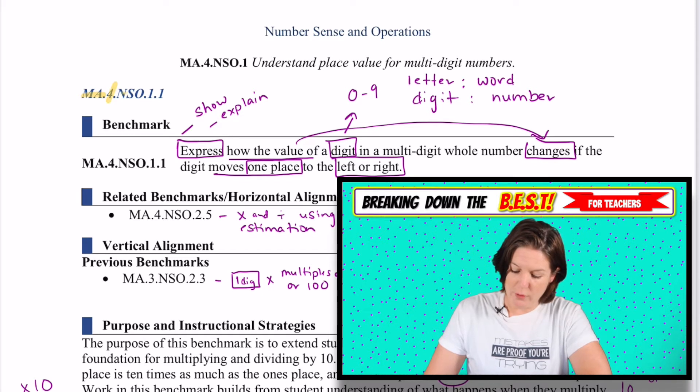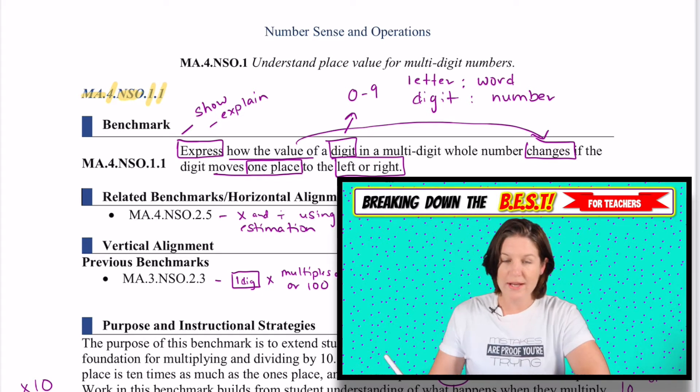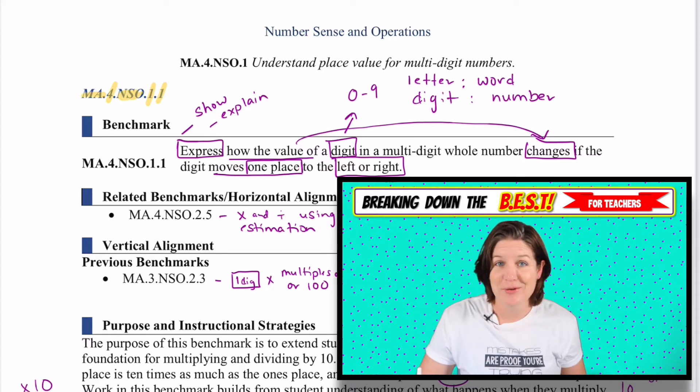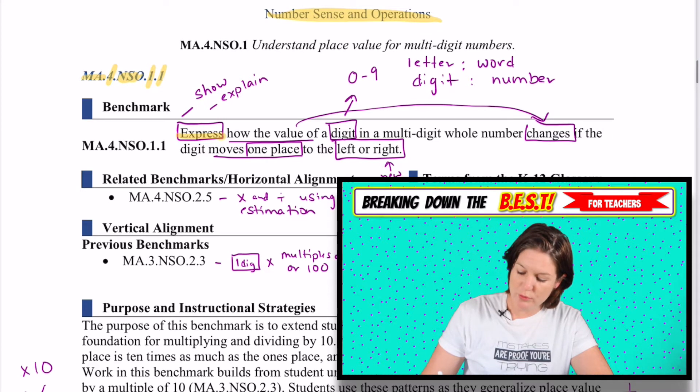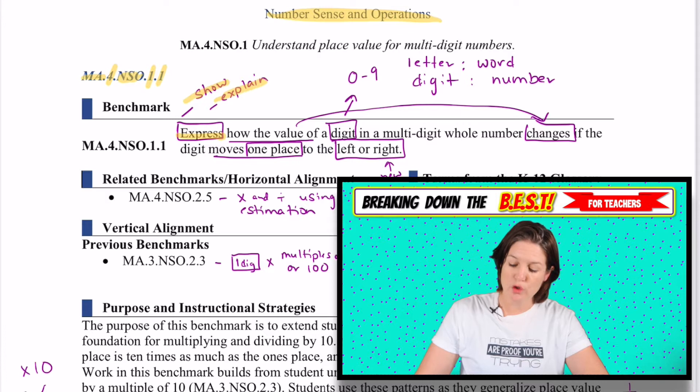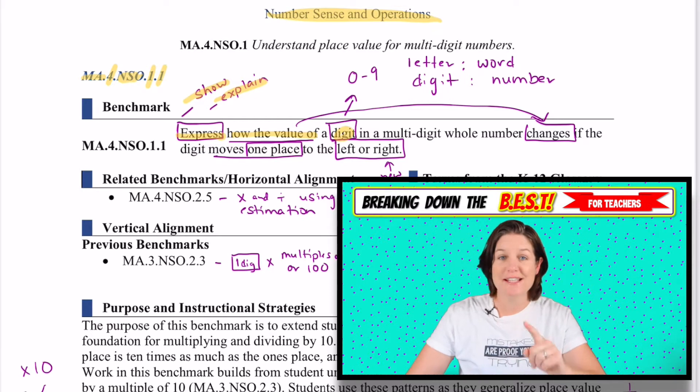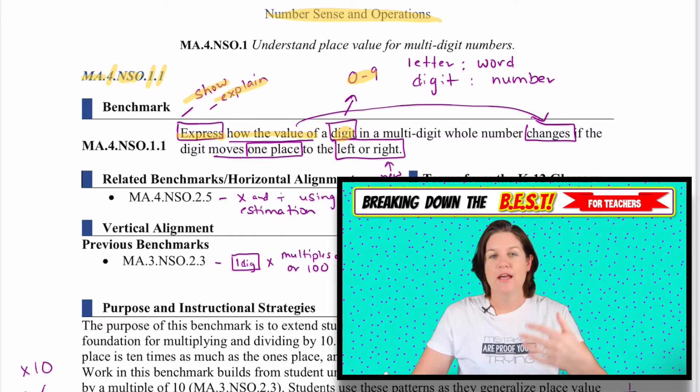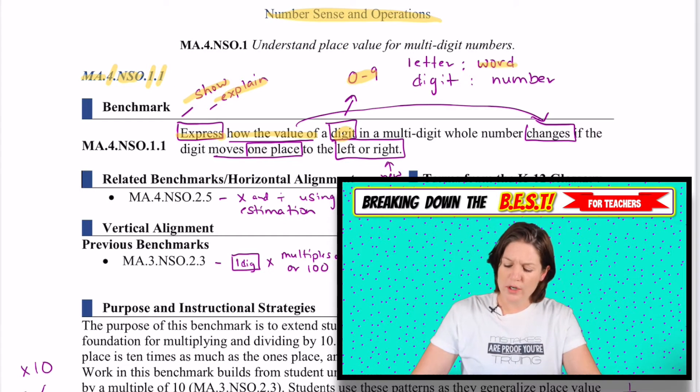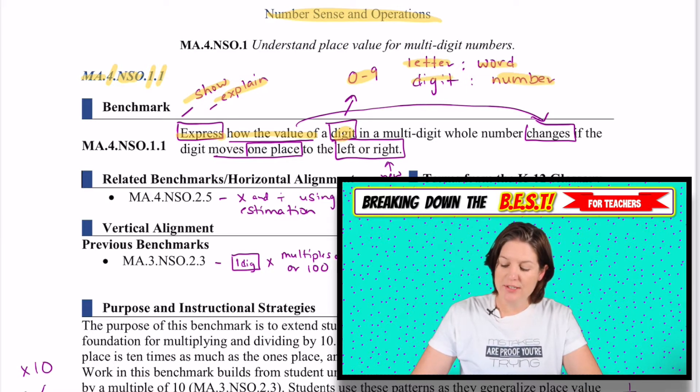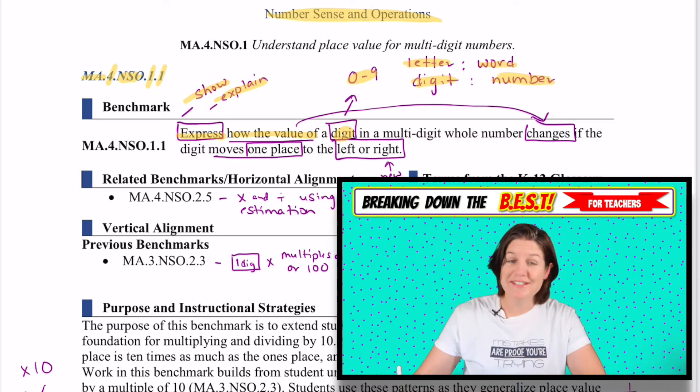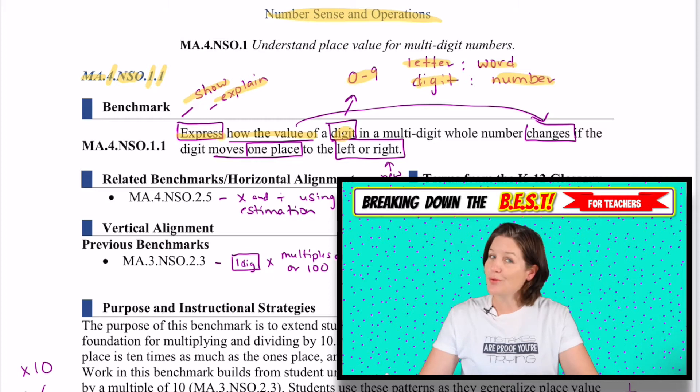Today's standard is MA.4.NSO.1.1. MA stands for math. 4 stands for fourth grade. NSO stands for number sense operations. That's our strand that we're working in. And the benchmark is 1.1. So the standard says to express, which means that we need our students to be able to show, to explain how the value of a digit, and by the way, a digit is a single number, zero through nine.